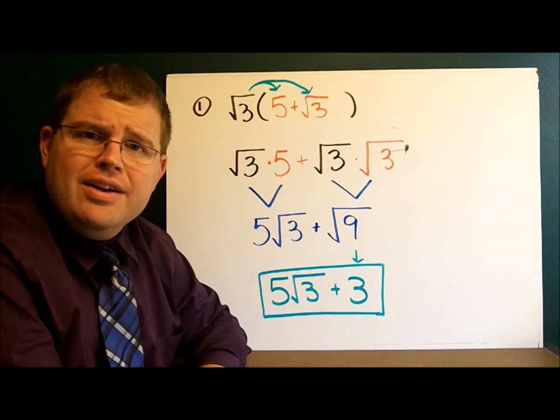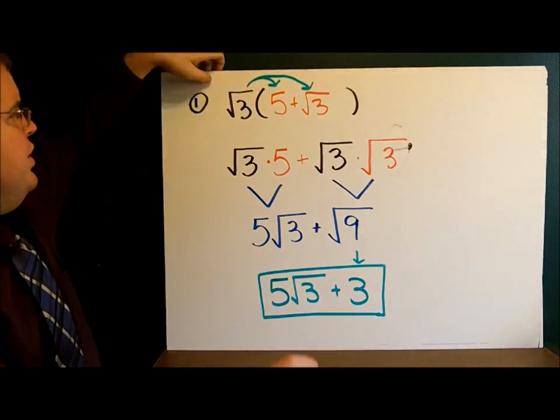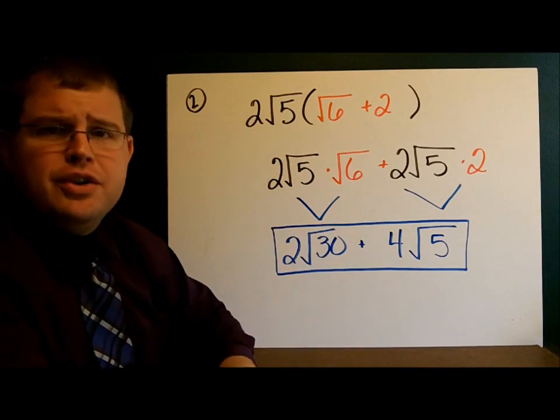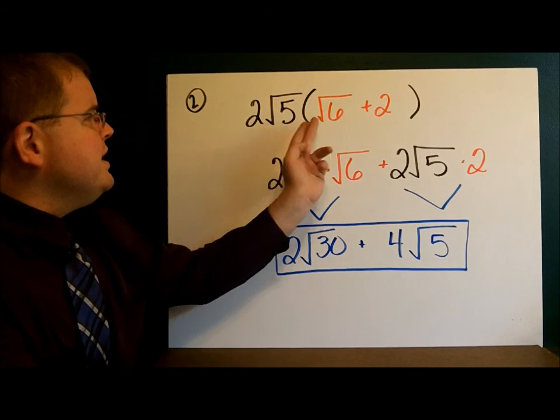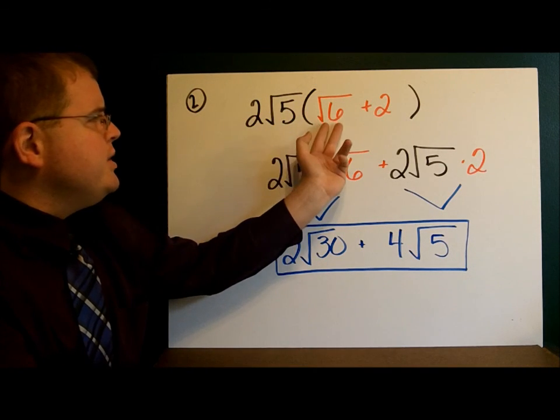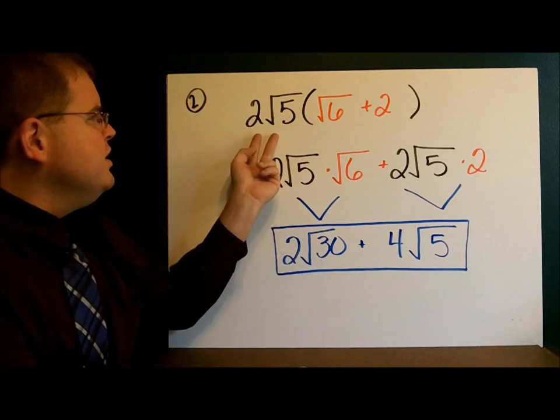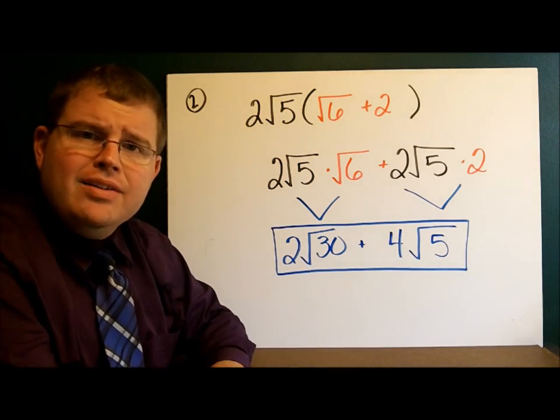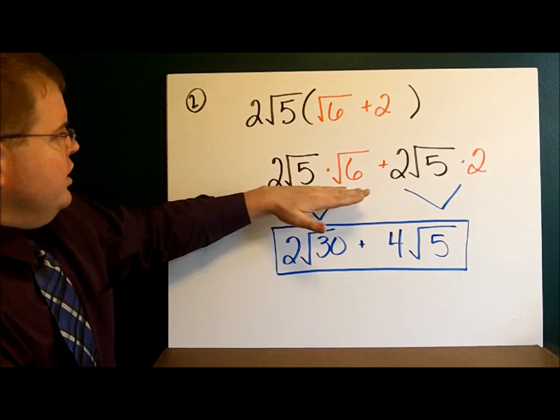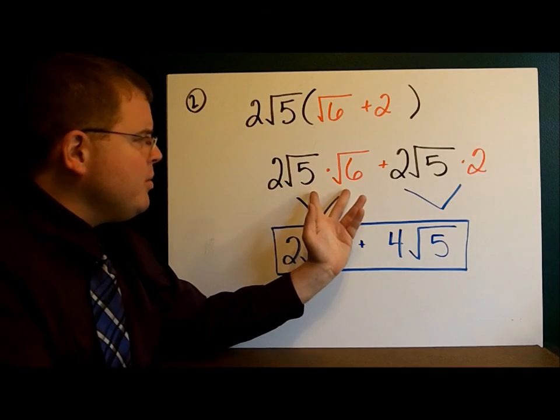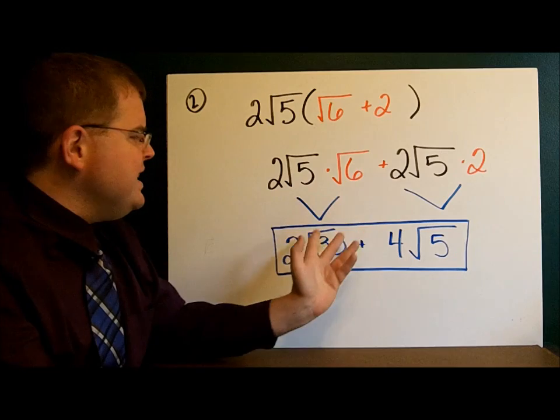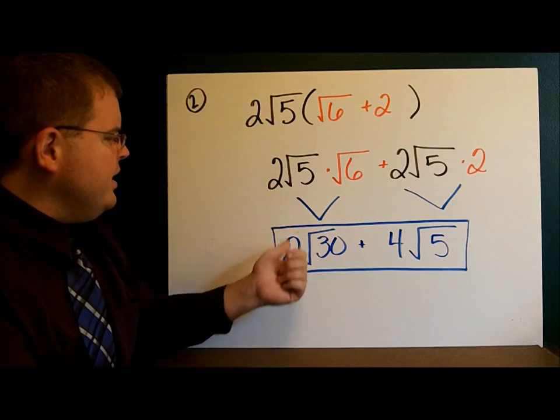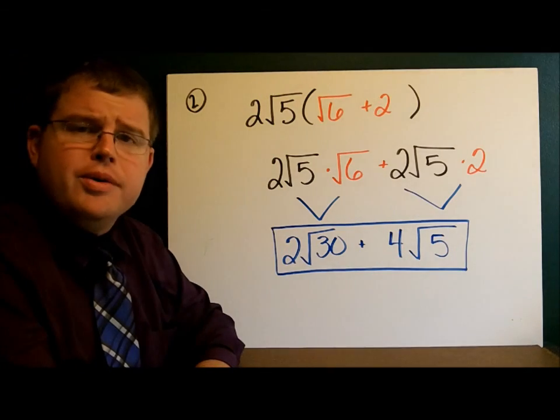Let's take a look at how you did. On example 2, we had 2 square roots of 5 times 6 plus 2. And we're using the distributive property. 2 square roots of 5 times 6, 2 square roots of 5 times 2. And now let's do our multiplication. 2 square roots of 5 times the square root of 6. We multiply the numbers on the inside. That gives us our square root of 30. 2 times 1 is 2. So we have 2 square roots of 30.